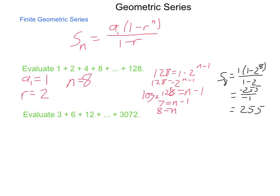Let's go through that process again, evaluating 3, 6, 12, all added up to 3072. Our a sub 1 is 3. Our r value, how do we move from 3 to 6 and 6 to 12? We are doubling the items. r is 2. Now, n, we're going to have to solve for.